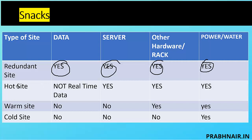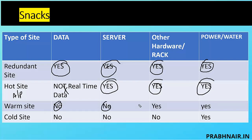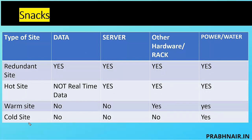A hot site is active and passive — we don't have much data, but servers, racks, and power are there. A warm site has no data and no servers, only racks — like a co-working space where you move your laptop from one location to another. A cold site has nothing except water and power. So if the exam asks which site takes more time to restore, the answer is cold site — it's cost effective but slow. The site that is immediately available is the redundant site, also called a mirror site.